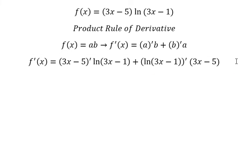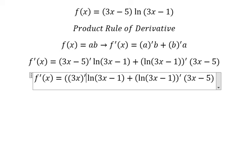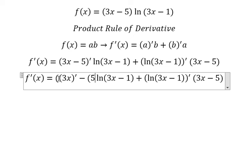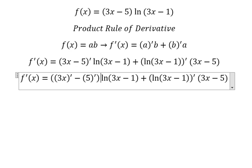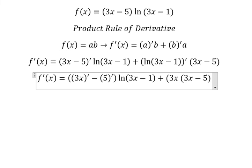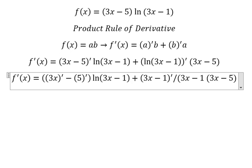So for this one, we do first derivative of 3x minus 5 with first derivative. And this one, if we do first derivative, we will continue to do first derivative of 3x minus 1 over 3x minus 1.